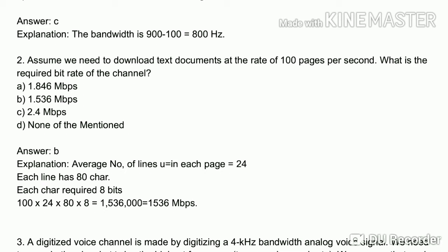To find the bit rate for 100 pages per second, we multiply: 100 pages × 24 lines × 80 characters × 8 bits. This gives us 1.536 Mbps as the required bit rate.